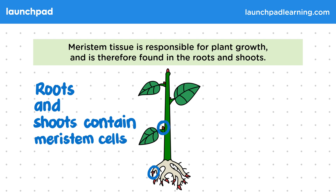For the exam, you need to be able to state that meristem tissue is found at the growing tips of shoots and roots in plants.